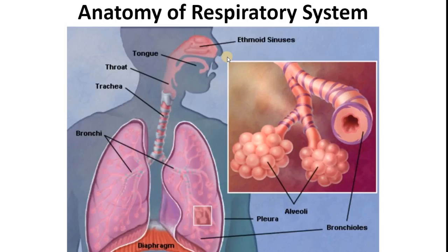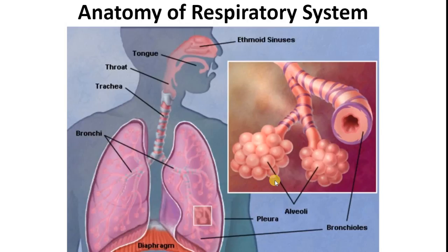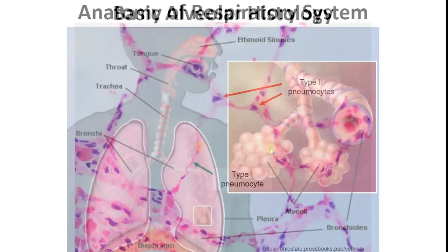As we all know, when we breathe, air travels from the nose into the trachea. The trachea then branches into two major bronchi, which continue to branch into narrower bronchioles that finally open up into clusters of air spaces called alveoli, as we can see in this magnified image. And within these alveoli, oxygen from the inhaled air is exchanged for carbon dioxide that is carried in the blood.